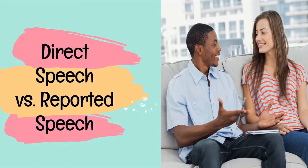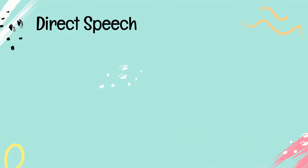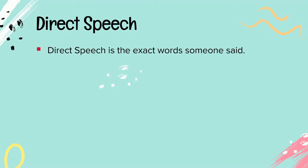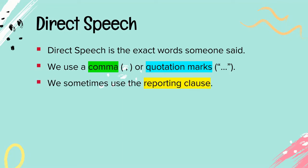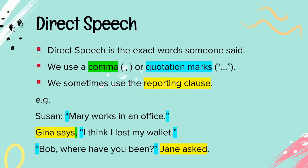First, direct speech versus reported speech. Direct speech is the exact words someone said. We use a comma or quotation marks, and we sometimes use the reporting clause. For example: 'Mary works in an office.' Gina says, 'I think I lost my wallet.' Bob: 'Where have you been?' Jane asked. Pay attention to the colored ones: comma in green, quotation marks in blue, and reporting clause in yellow.